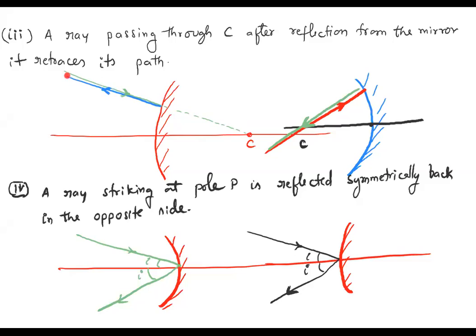In case of a convex mirror, the incident ray appears to pass through focus but falls on the mirror before reaching focus. That is where it gets reflected and moves in the retraced path. The last rule: if any ray strikes the pole, it is reflected symmetrically back in the opposite direction.